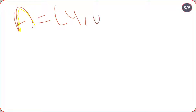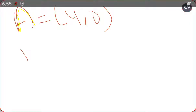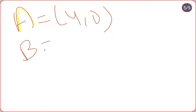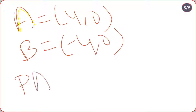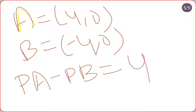Second homework question: A equals (4, 0), B equals (-4, 0), PA minus PB is equal to 4. Find the equation of locus of P.